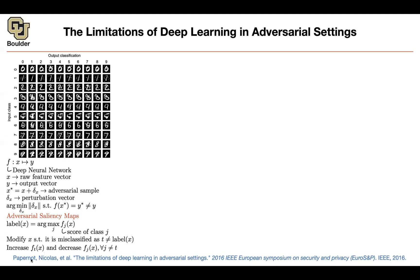You want to increase the probability or score of the target you chose, because you want your neural network to make a mistake on that particular target. And then you want to decrease the score of every other class — that's your objective. The question is how to achieve this: how to increase f_t while decreasing the others, by changing only a few pixels in your image. You want to find pixels that the adversary should increase to achieve misclassification.